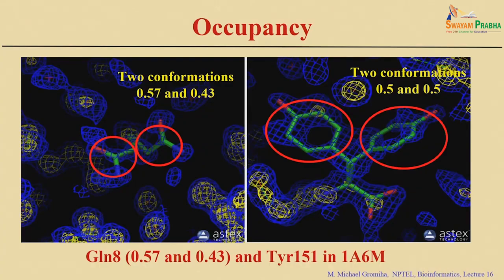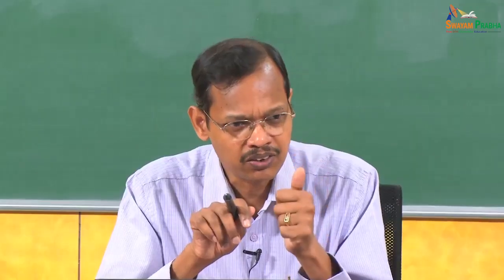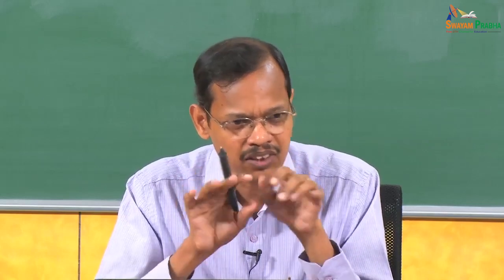Here is an example: glutamine 8 has one conformation with occupancy 0.57 and another with occupancy 0.43. Another example is tyrosine 151, where both conformations have similar occupancy of 0.5 and 0.5. If the same position is occupied by all molecules then the occupancy is 1; if they have different conformations, the occupancy is split so that the total equals 1.